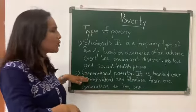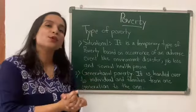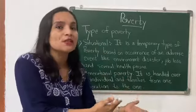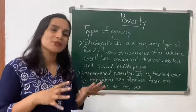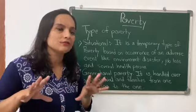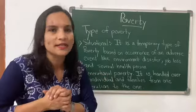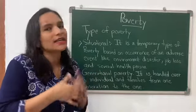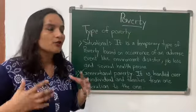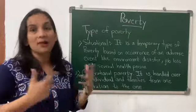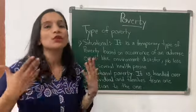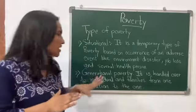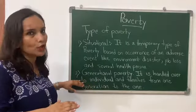The second one is generational poverty. Generational poverty is a situation that passes from one generation to the other. It is really very complicated — the person is trapped so badly that they cannot come out of that situation. They don't have the tools to find a solution, so this is a very complicated type of poverty.